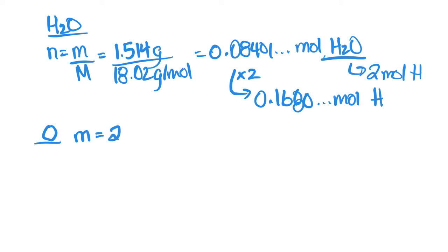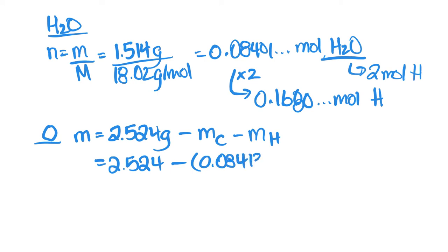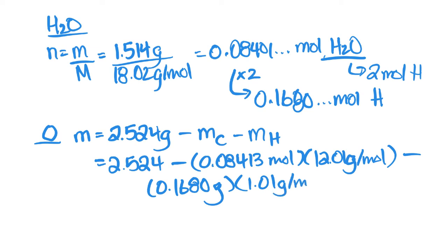To do that, we're going to take our original mass, which is 2.524 grams, and we're going to subtract the mass of carbon and subtract the mass of hydrogen. To find our mass of carbon, we're going to take the moles that we just calculated, 0.08413 moles, and multiply it by the molar mass of carbon, which is 12.01 grams per mole. Then we'll do the same with hydrogen. Hydrogen, we determined we had 0.1680 moles, and we'll multiply that by the molar mass of hydrogen, which is 1.01 grams per mole.